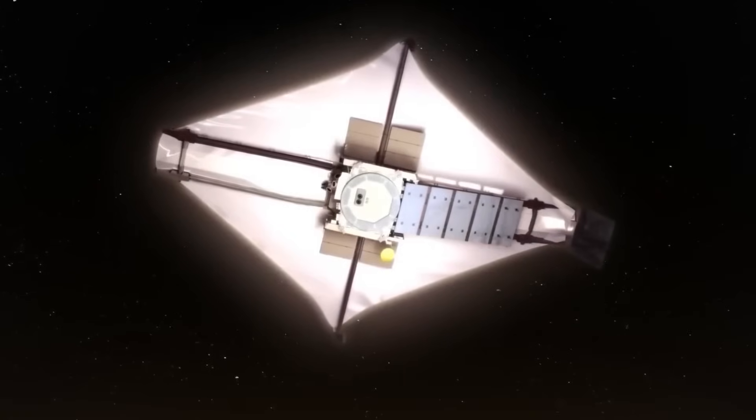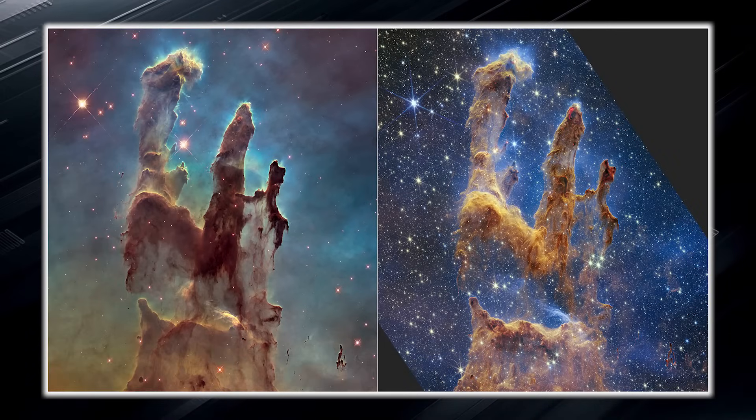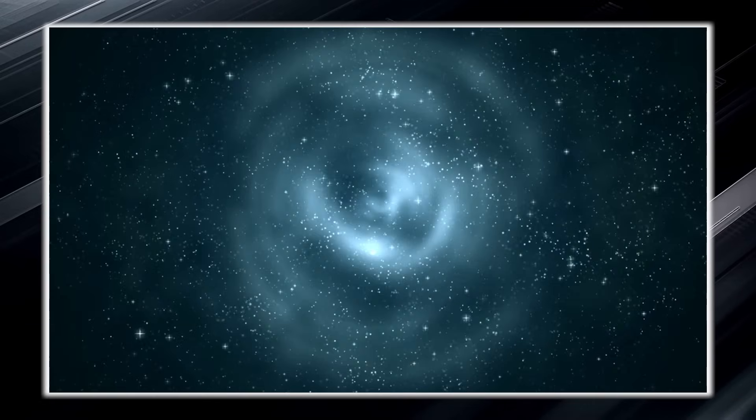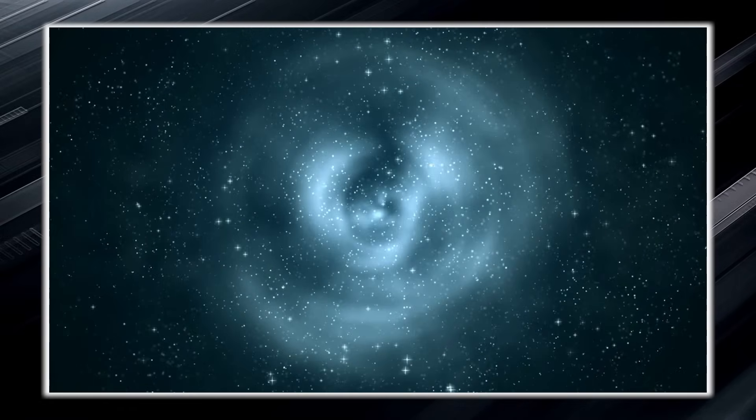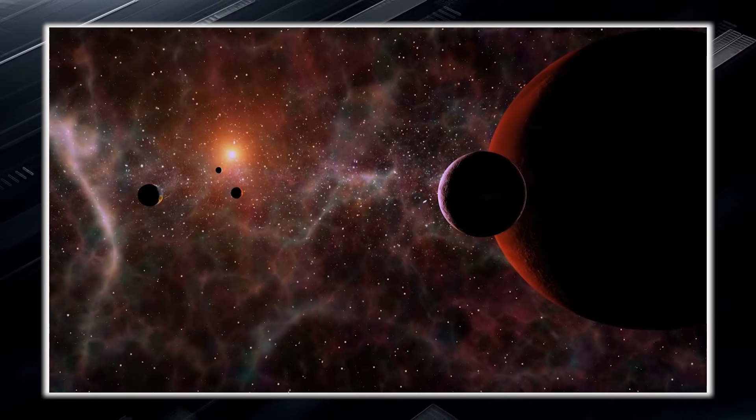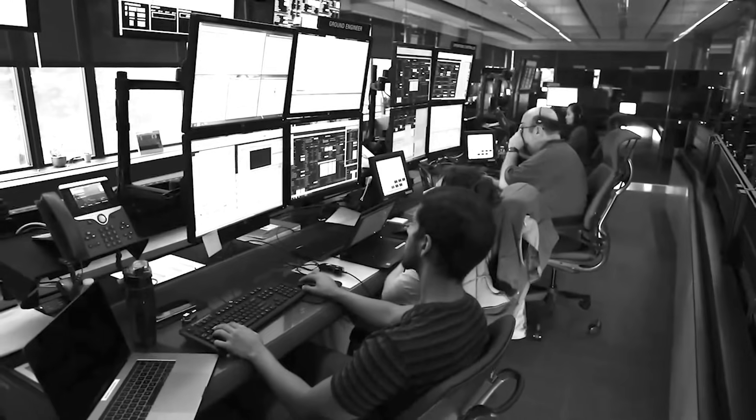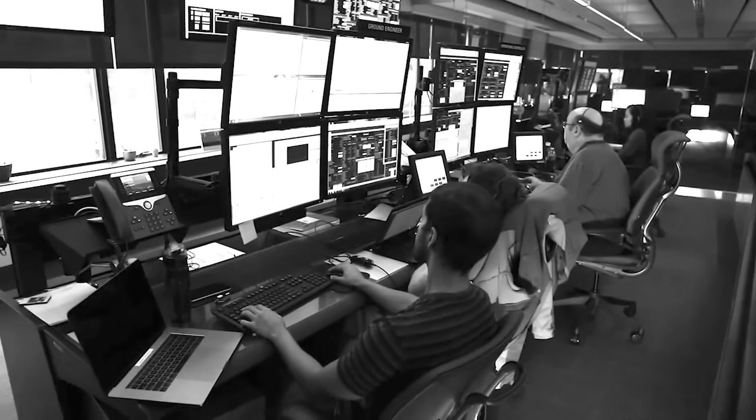When the James Webb turned its instruments toward the iconic Pillars of Creation, it captured the famous dust clouds in incredible detail. These pillars are located in the constellation Serpens, about 7,000 light years away from Earth. The Pillars of Creation are part of the Eagle Nebula, large clouds of gas and dust that were first photographed by the Hubble Space Telescope in 1995.